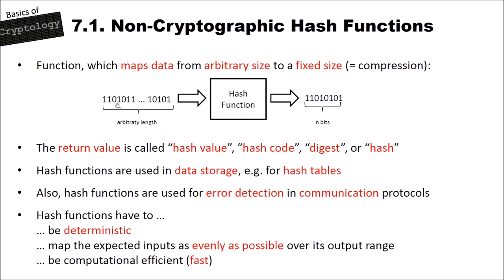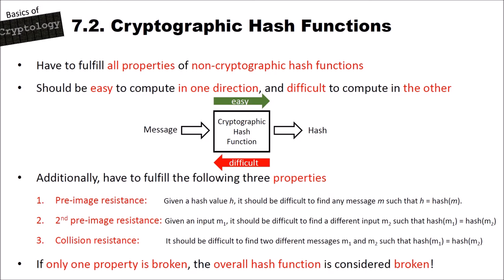What is a cryptographic hash function? Cryptographic hash functions must fulfill all properties of non-cryptographic hash functions, since a non-cryptographic hash function is clearly a hash function. Additionally, cryptographic hash functions should be easy to compute in one direction but difficult to compute in the other direction. You put in a message, compute the cryptographic hash function, and get your hash value — this way is easy. But when you have a hash value, it should be difficult to recover the original message.